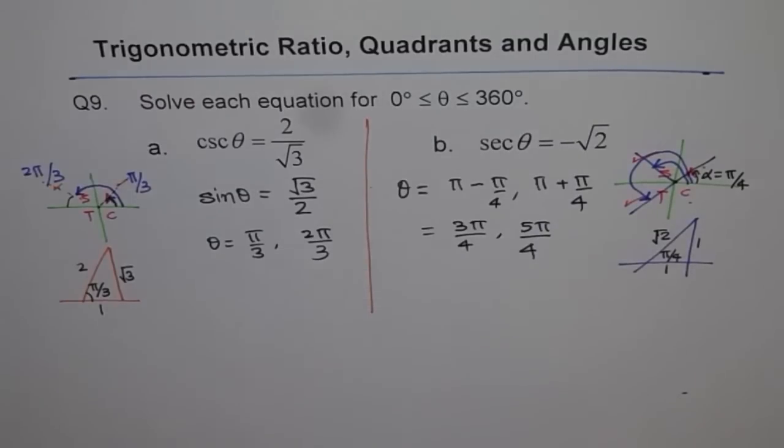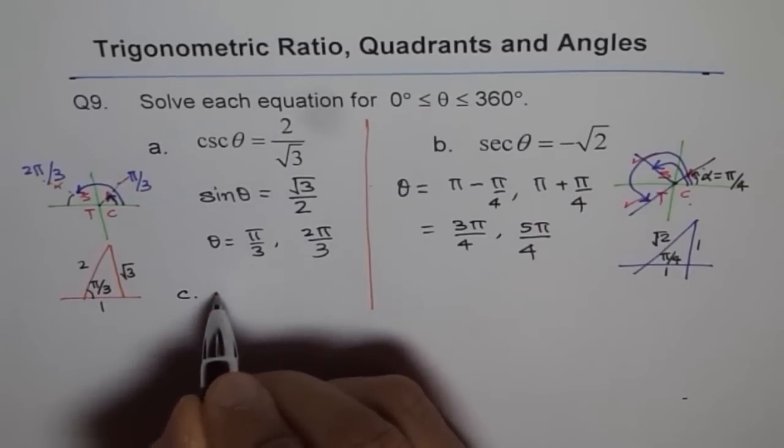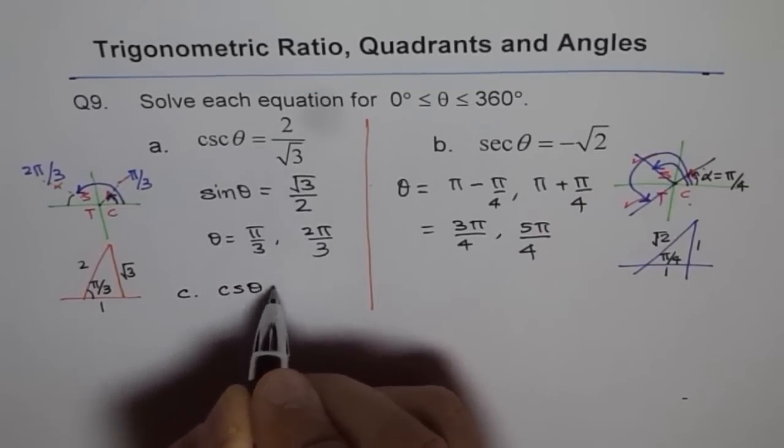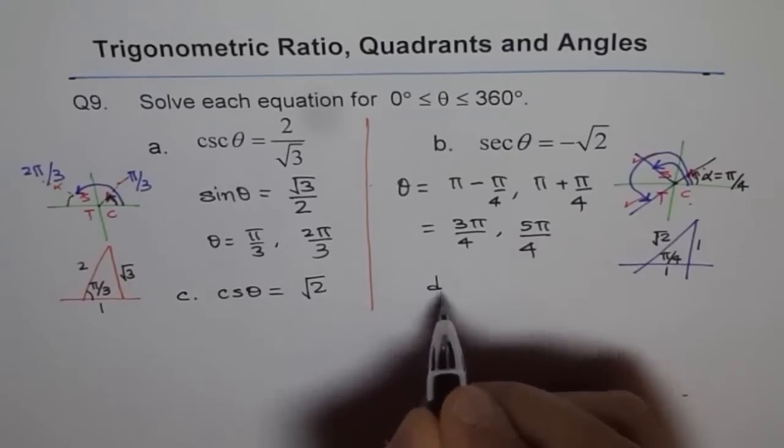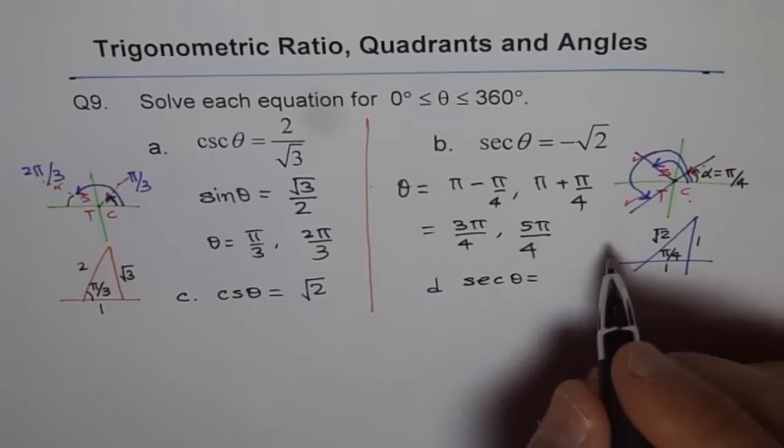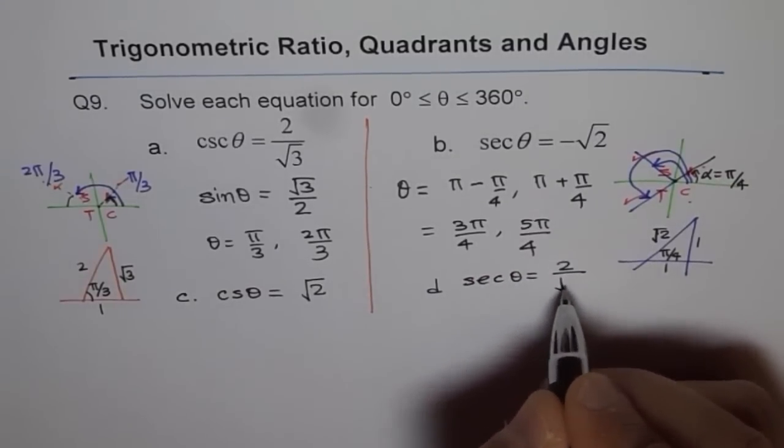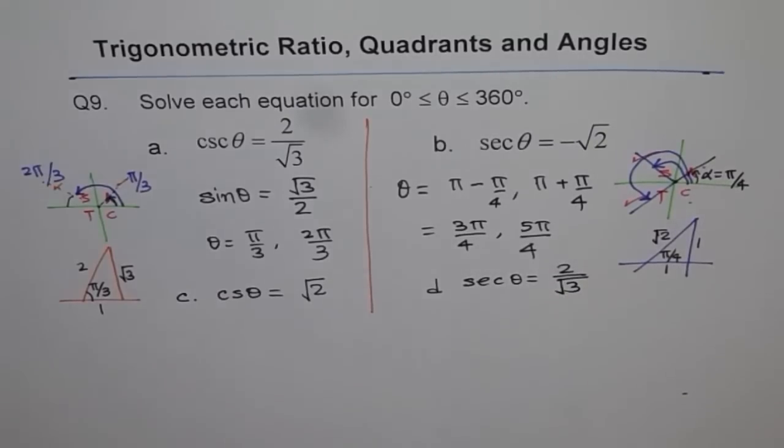As a practice, you can try doing this. Try cosecant theta equals to square root of 2 and secant theta equals to 2 over square root of 3. Try these yourself. Thank you.